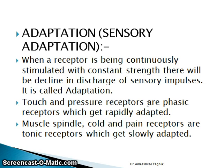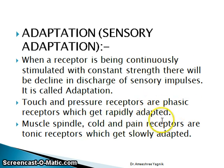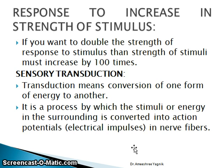Second property: sensory adaptation. When a receptor is continuously stimulated with constant strength, there is a decline in the discharge of sensory impulses — this is called adaptation. For example, when doing sit-ups, pain and exhaustion are felt initially, but when you continuously do that activity you adapt to it and the pain sensation decreases. Touch and pressure receptors are phasic receptors which get rapidly adapted, while muscle spindle, cold, and pain receptors are tonic receptors which get slowly adapted.